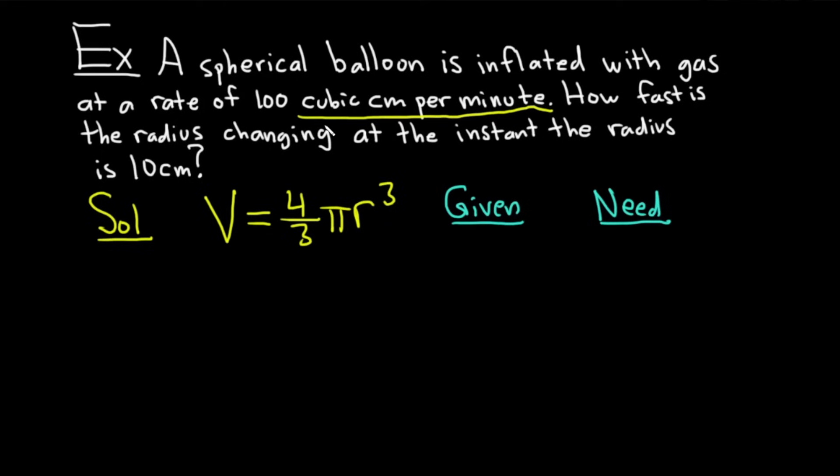So the first sentence says, a spherical balloon is inflated with gas at a rate of 100 cubic centimeters per minute. That's the rate of change of volume. And again, we know that because it says cubic. And those are the units for volume. It's always cubic. So this tells us that dV/dt is going to be equal to 100. And that's because it's being inflated. If it was like a melting snowball, then it would be negative because the volume would be decreasing.